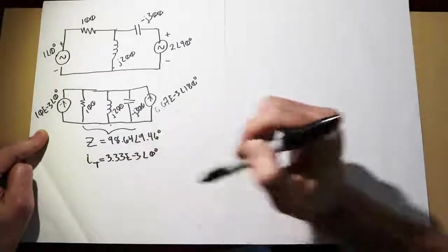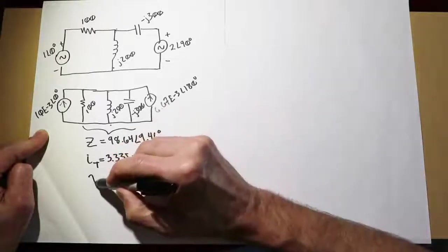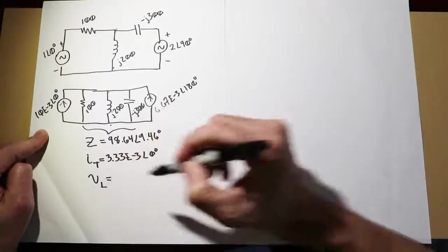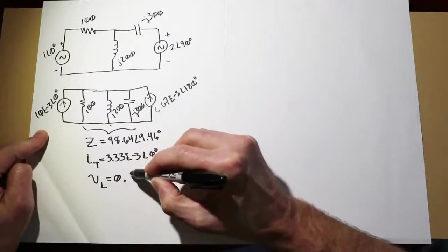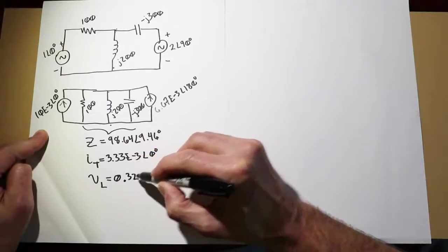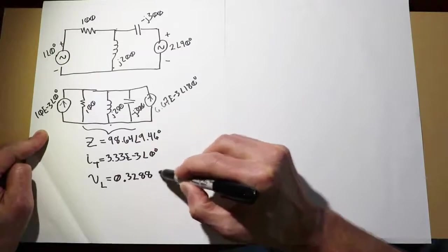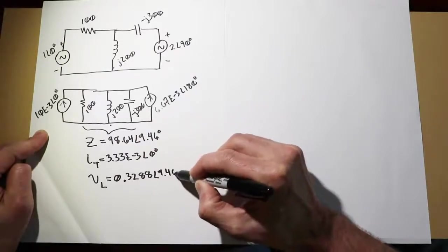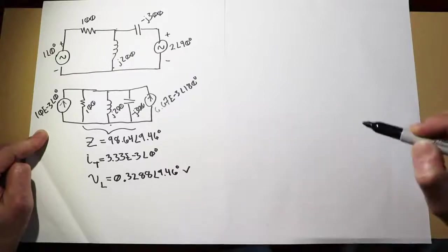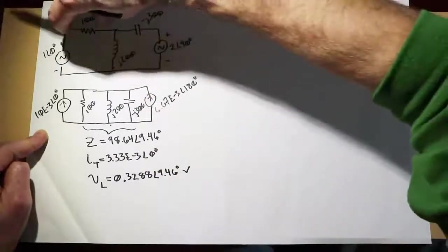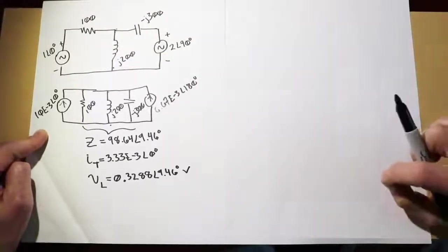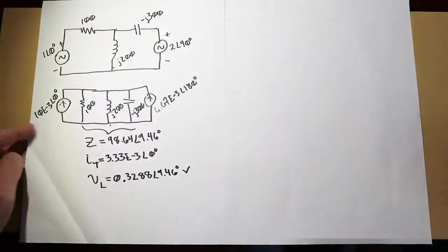Using Ohm's law, we pass that current through this impedance and wind up with a voltage across the inductor of 0.3288 volts at an angle of 9.46 degrees. That's the voltage that appears across the inductor, and we could now use KVL to find those other voltages, currents, and so forth. All well and good.